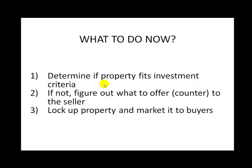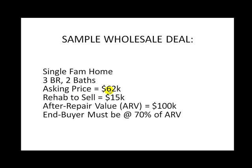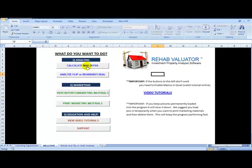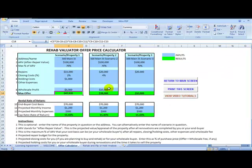The first thing you need to do is determine whether this deal fits your investment criteria. If it doesn't at the asking price of $62,000, you need to figure out the maximum price you can offer the seller to make the deal work. If you can negotiate down to that price, lock up the property under contract and market it to your wholesale buyers. You can click on 'Calculate Max Offer' — this tool is available in both the free and premium versions.